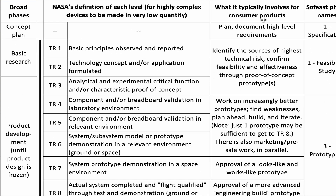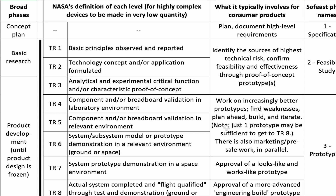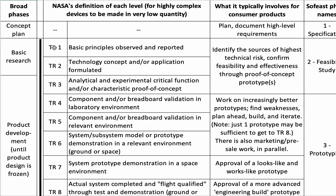Let's compare them with what is traditionally involved when developing a new consumer product. Obviously, you need to document the high-level requirements and do some planning here. Typically, that's what we call proof of concept — identifying the sources of highest technical risk, trying to address them and actually prove that the assumptions are okay and we can keep working. And then you go into some iterations of building prototypes, testing them, seeing the weaknesses. This is really a technical readiness level.